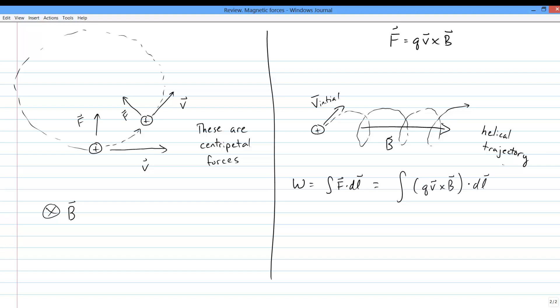Work is the integral of f dot dl. And if the f goes like qv cross b, the force has to be perpendicular to the direction of travel. But the dl in the work equation is a step in the direction that the particle is traveling. So qv cross b is perpendicular to dl.